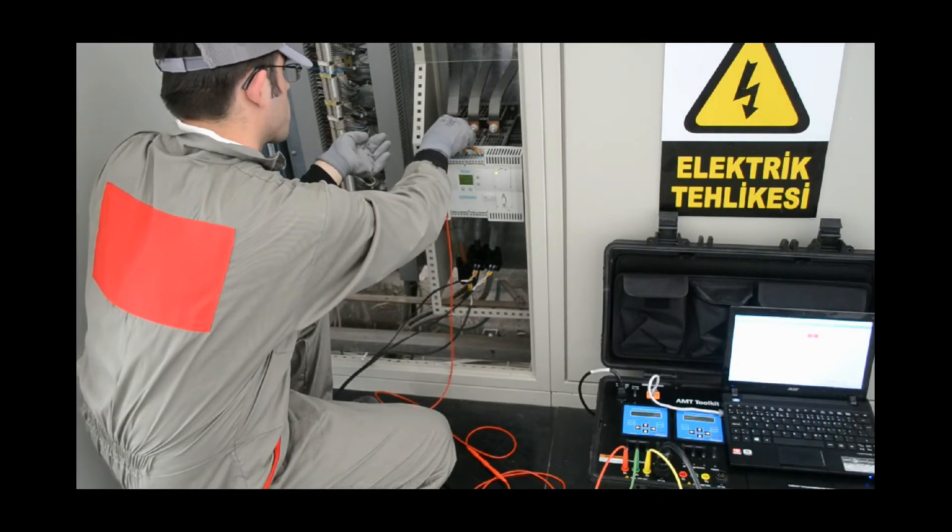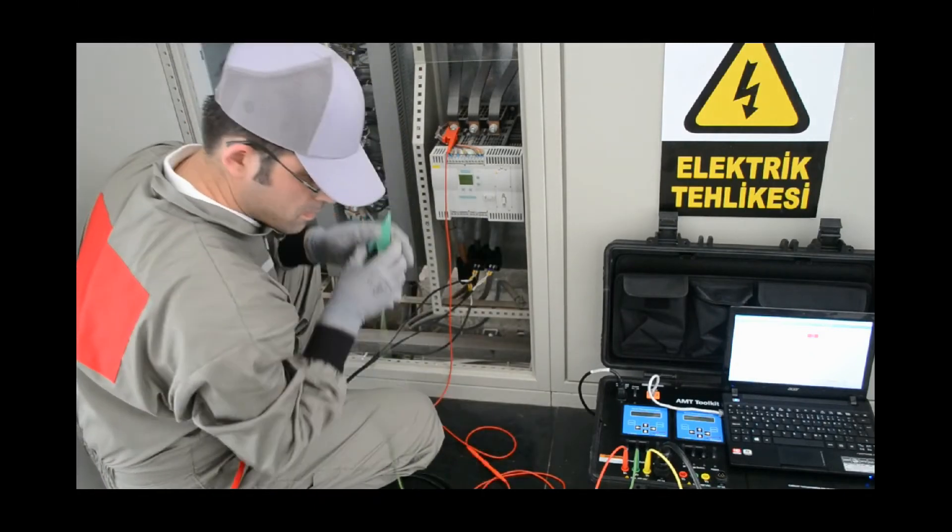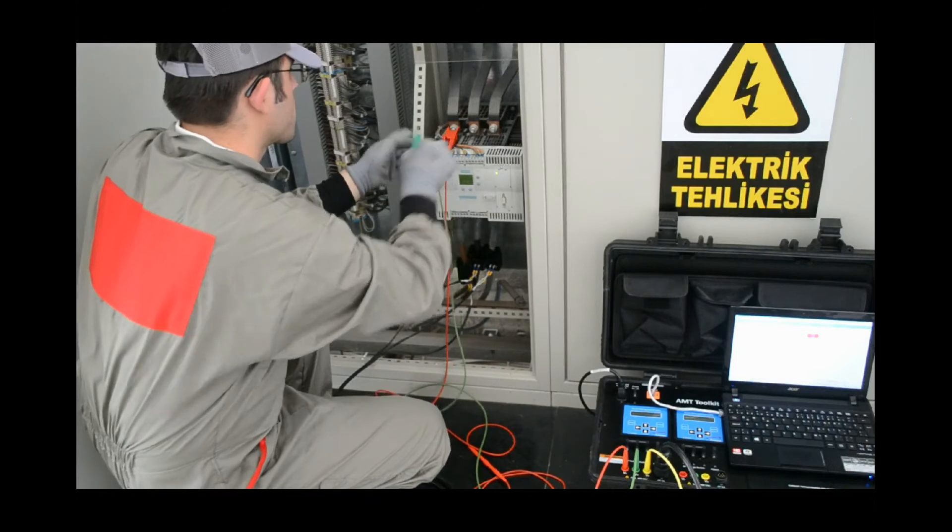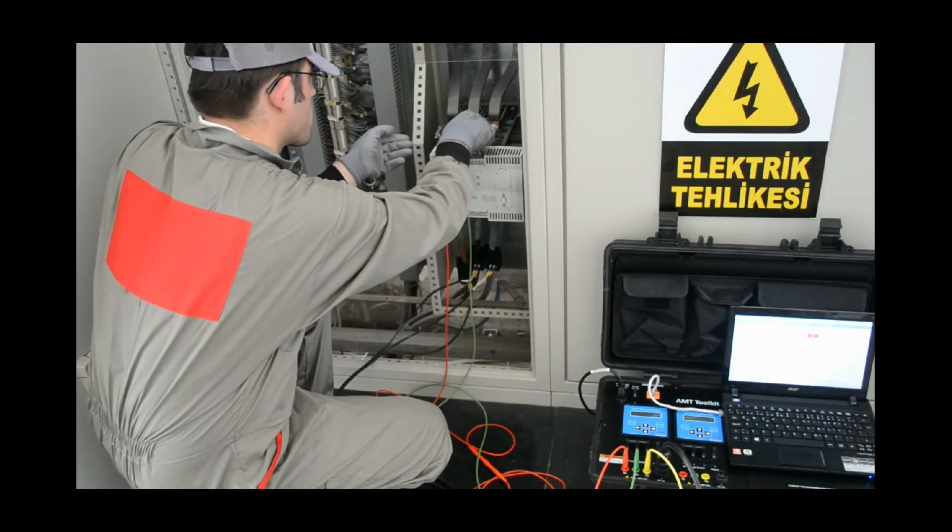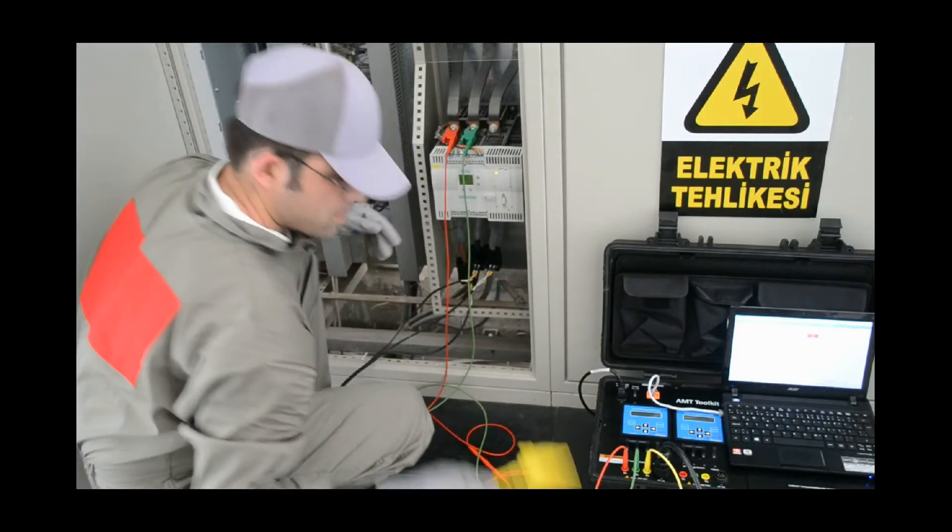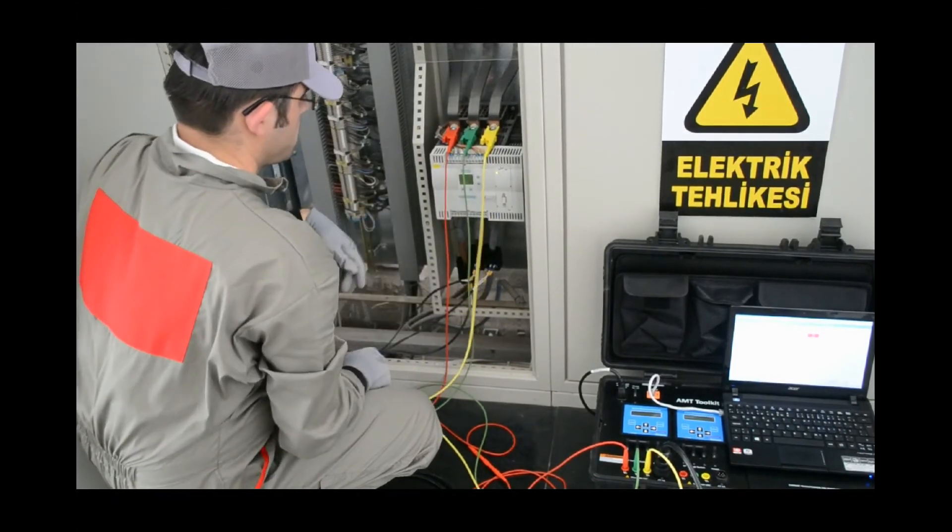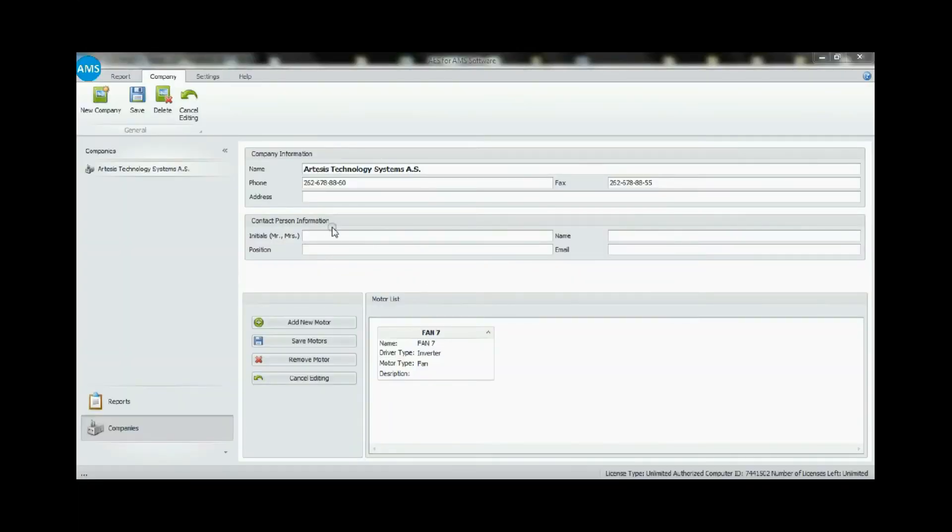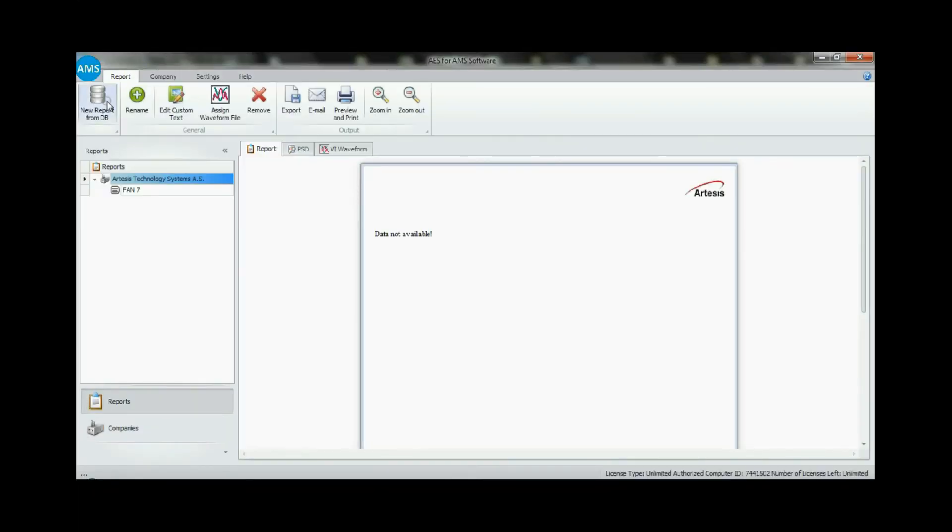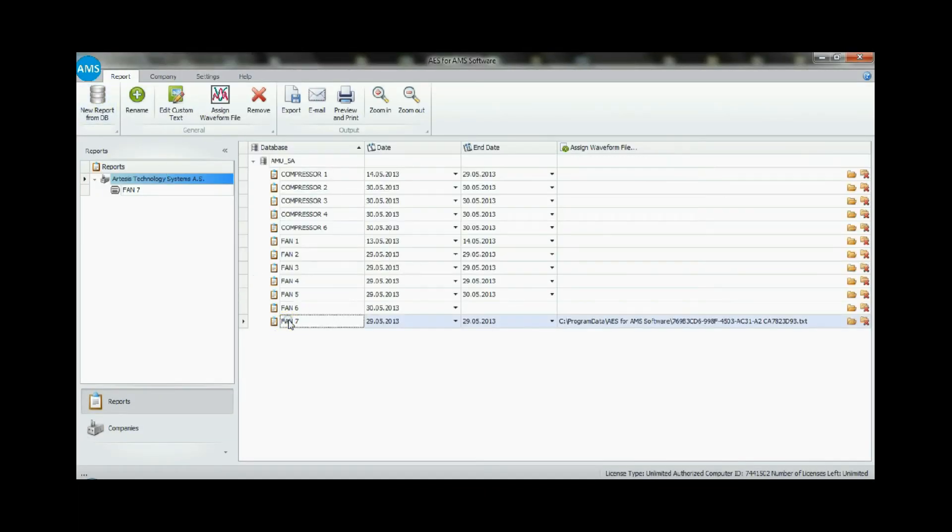When this is complete, the software creates a complete condition assessment report for the connected equipment. Each report lists the existing faults of the motor-driven system. Unlike conventional systems, this information is provided to the user immediately without having to wait for data trends to be collected and analyzed over an extended period.